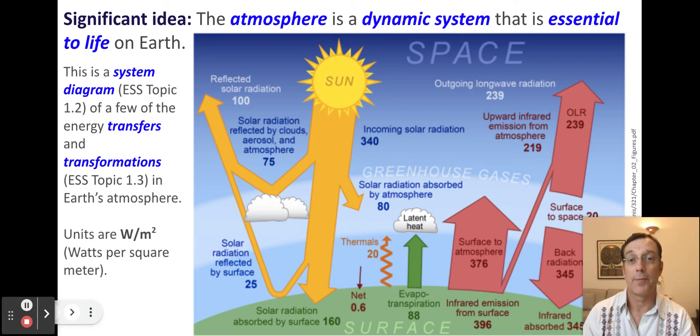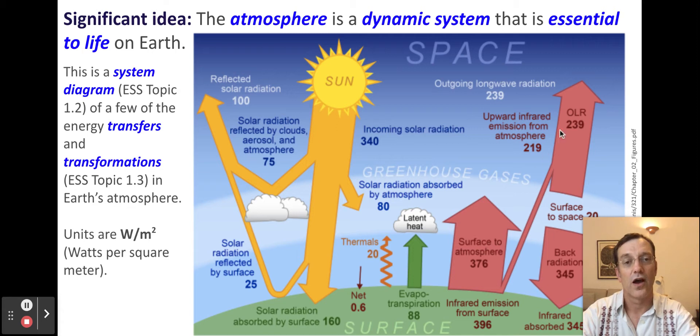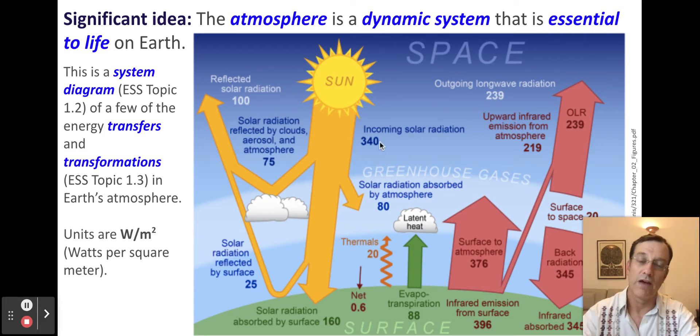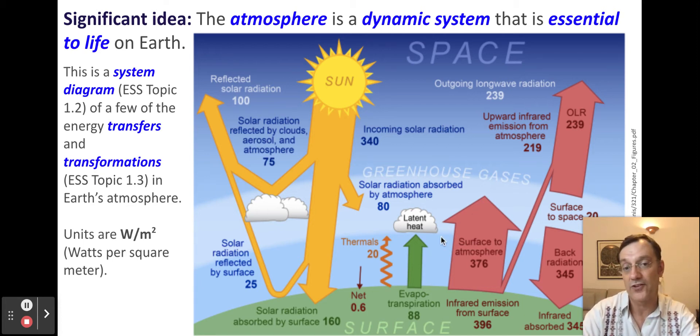The first big idea about the atmosphere is that it is a dynamic and constantly changing system and that system is essential to life on Earth. The diagram you see on the screen is a nice systems diagram that shows all of the incoming solar radiation from our sun and it also shows the outputs of energy from our planet via the atmosphere. You'll see in this diagram we have a bunch of transfers or movement of energy. We also have transformations of energy when incoming sunlight is absorbed by either clouds, directly absorbed by the atmospheric gases, or the surface of the planet itself.